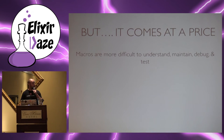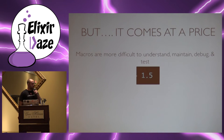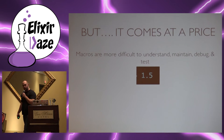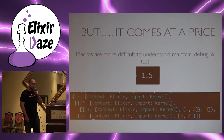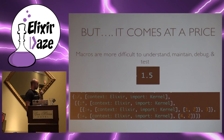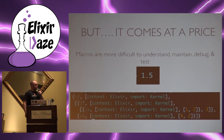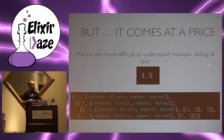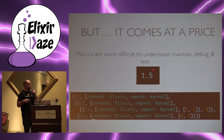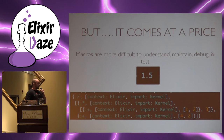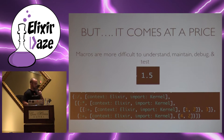Macros are more difficult to understand, maintain, debug, and test. Here's what you would see if you were using a function, and here's what macros see. If you haven't seen Elixir's AST before, this is what it looks like — and frankly, this is a pretty basic one. I don't think it's debatable that 1.5 is easier to understand than this crazy nested tuple of rage. That's the only way I can describe it. Trying to debug that just makes me really sad.